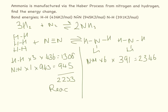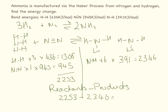Reactants minus products: 2,253 − 2,346 = −93 kJ/mol. This is exothermic. You can use your own logic to check this is correct — hopefully from your other studies you know that the production of ammonia via the forward reaction of the Haber process is exothermic. Thank you very much.